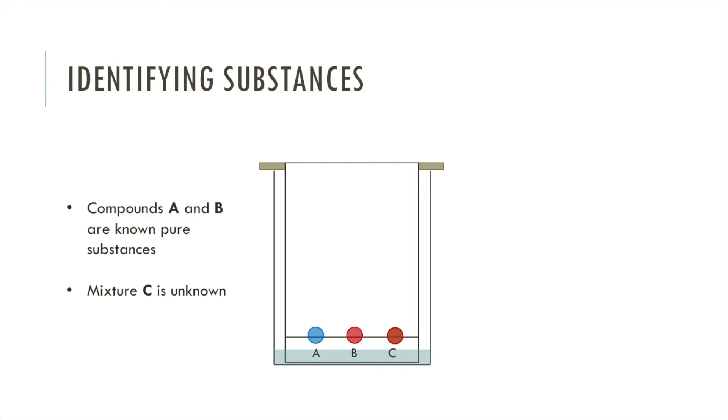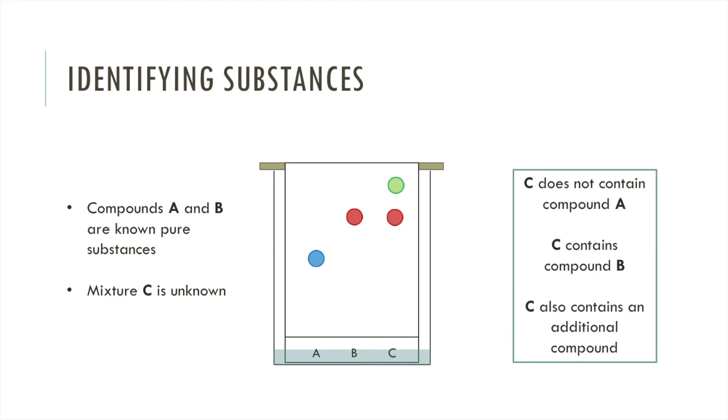Let's look at how chromatography is used to identify substances. Let's say we have three substances. A and B are both different known pure compounds. C is a mixture and we want to find out if compounds A and B are in it. Chromatography shows that C does not contain A because there is no spot with the same RF value as A. It contains B because another spot has separated that has the same RF value as B. But C also contains some other additional unknown compound that has traveled even further up the paper. This is what we'll be doing in the required practical so let's see how it's done in the lab.